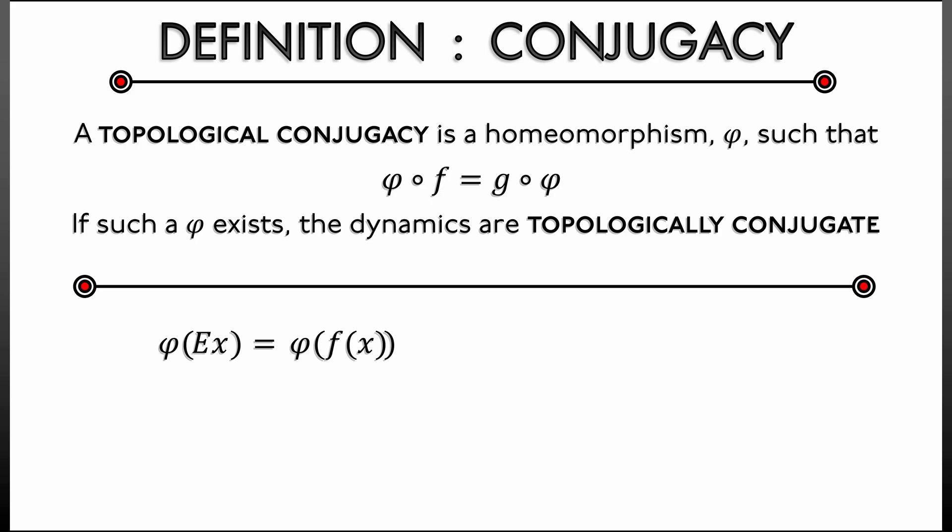Now if I rewrite that using operator notation, using compositions, then what I get is φ ∘ Ė(x) = φ ∘ f(x). And now we see where that definition has revealed itself, because with a topological conjugacy, φ ∘ f is really g ∘ φ. Okay, where is this going?